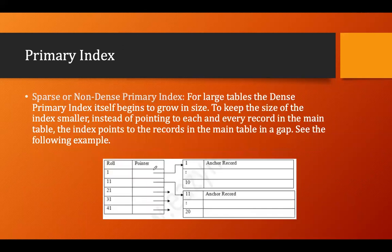A sparse index is different. The student table is divided into chunks of 10 records each, and the index has one entry per chunk. This is called a sparse index and is a category of primary index. It does not have one-to-one mapping — instead it has one-to-many mapping, meaning each pointer points to 10 records rather than one specific record.